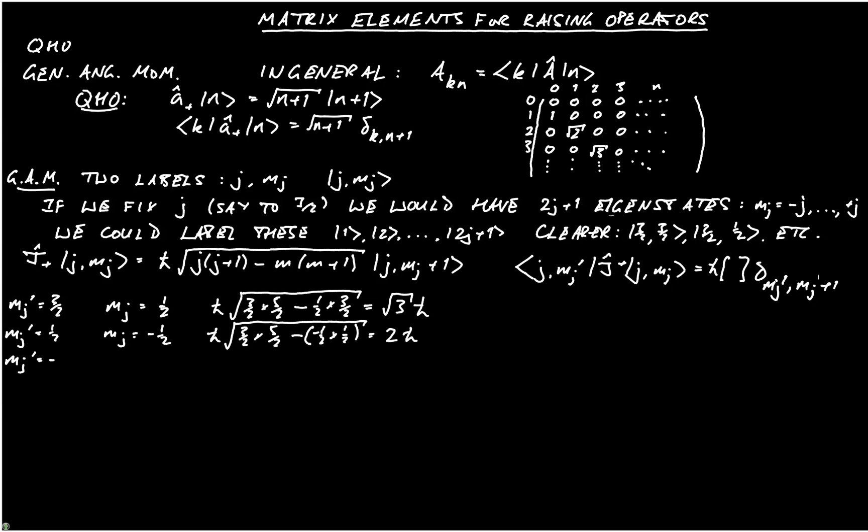For mj prime is minus a half, then mj has to equal minus 3 halves in order to get the delta function to equal 1, and we end up with h-bar root 15 over 4, minus, now we have minus 3 over 2 times minus a half, and so that gives us back the root 3 that we had before, root 3 h-bar. And if mj prime is minus 3 over 2, then mj would have to equal minus 5 over 2, and there is no entry.